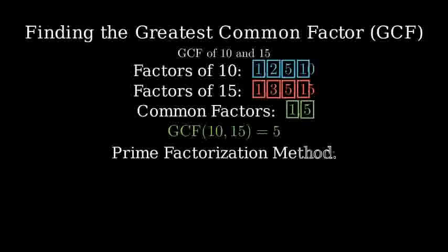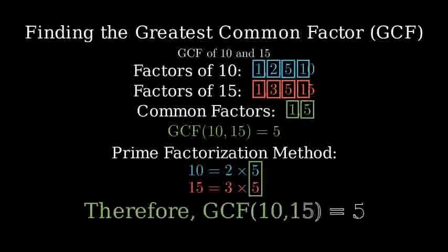Let's verify this using another method, prime factorization. 10 can be broken down into 2 times 5. 15 can be broken down into 3 times 5. The common prime factor between these numbers is 5, which confirms our earlier result.